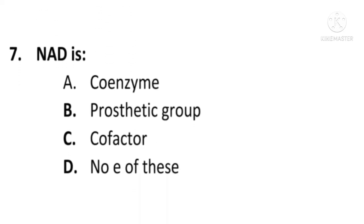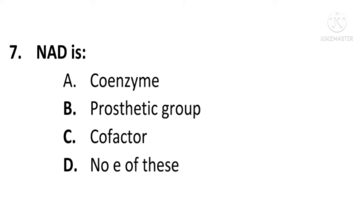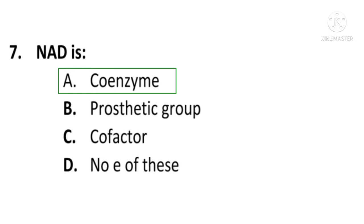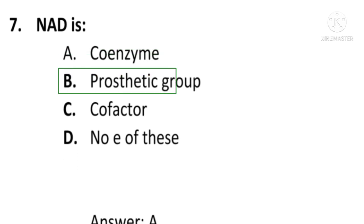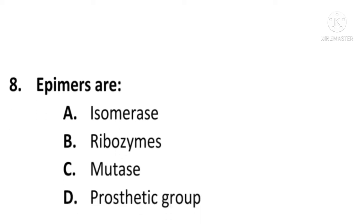Next question: NAD is either a — A) Coenzyme, B) Prosthetic group, C) Cofactor, or D) None of these. The correct option is A, Coenzyme. NAD is a coenzyme; A is the correct option.